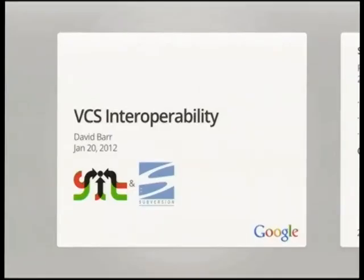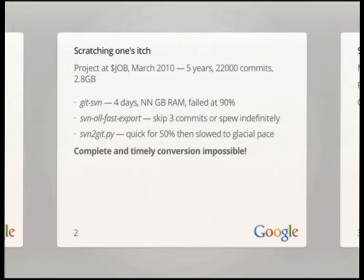Today I'm going to be talking about VCS interoperability, with a particular focus on Git and subversion and what's involved with trying to make them work together as friendly buddies. My interest in this topic all started with trying to scratch my own itch. I was working for a consulting company on a project — a proprietary project — which had five years of history, 22,000 commits, and the compressed archive of their history was 2.8 gig.